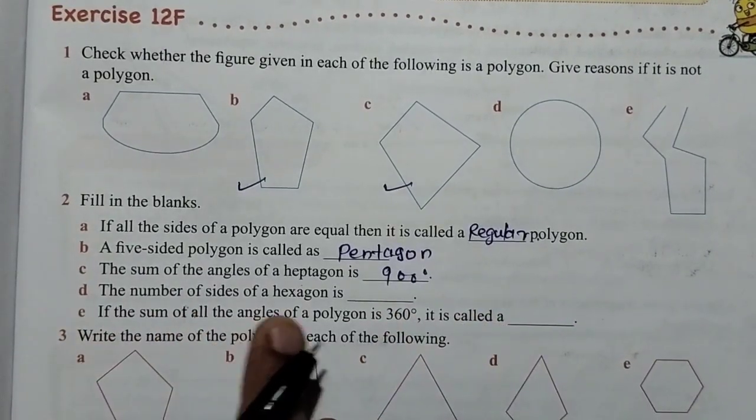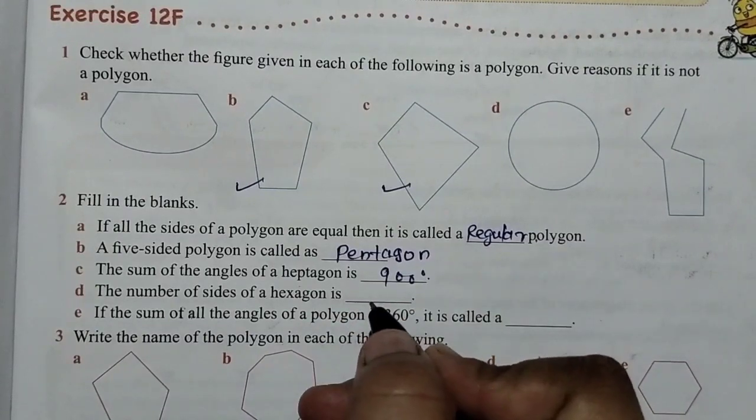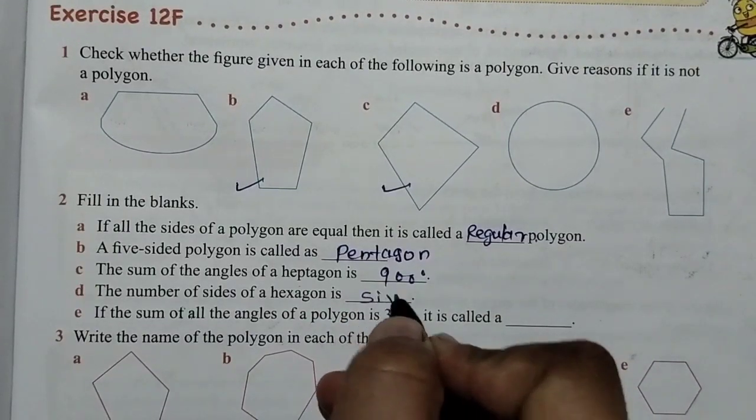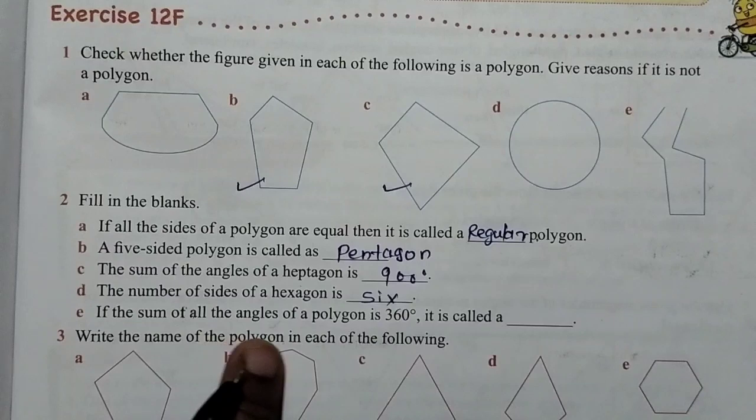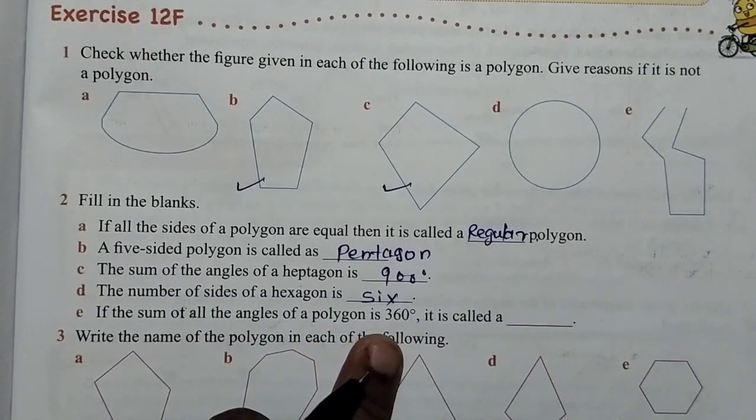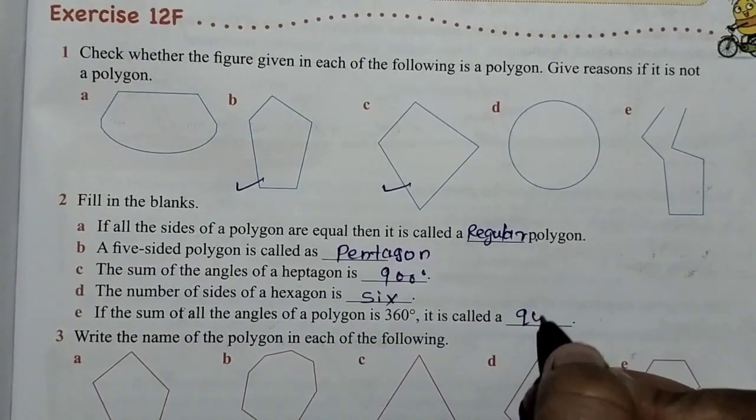The number of sides of a hexagon - hexagon has 6 sides. If the sum of all the angles of a polygon is 360 degrees, it is called a quadrilateral.